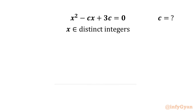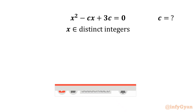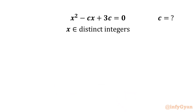Welcome to Infigyan friends. Today in this video we will be solving one very interesting question from algebra: find all real values of C for which x squared minus Cx plus 3C equals 0 has distinct integer roots. So we are going to calculate the real values of C.